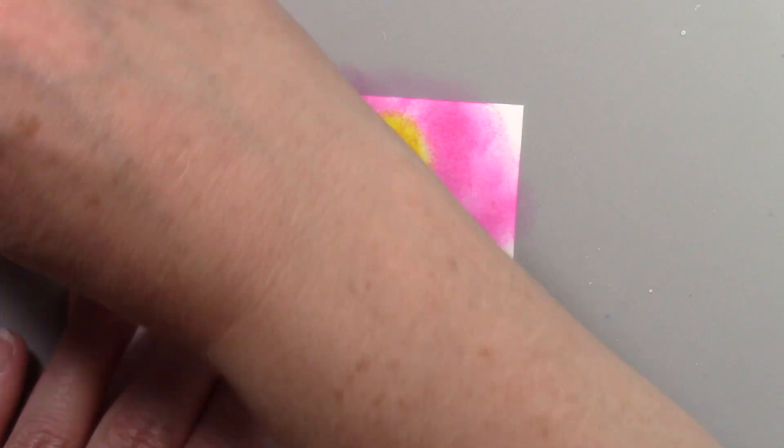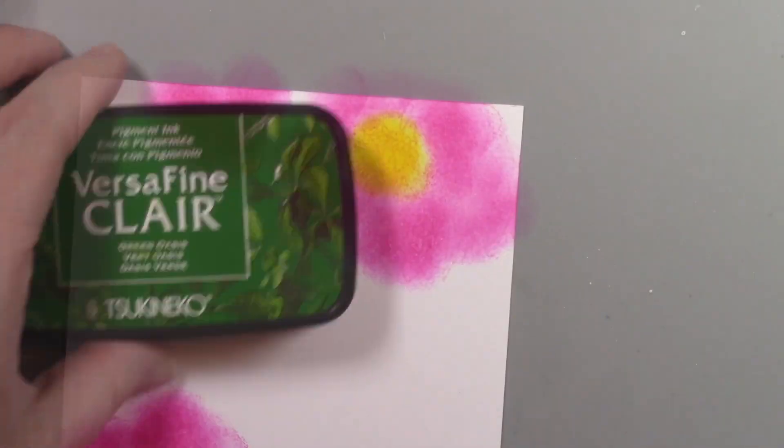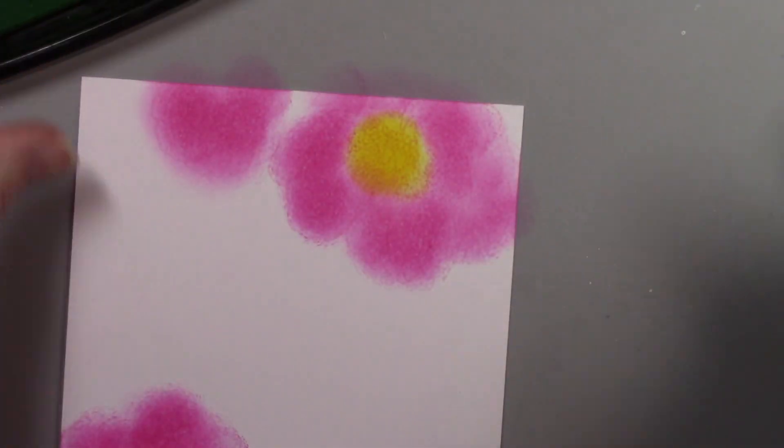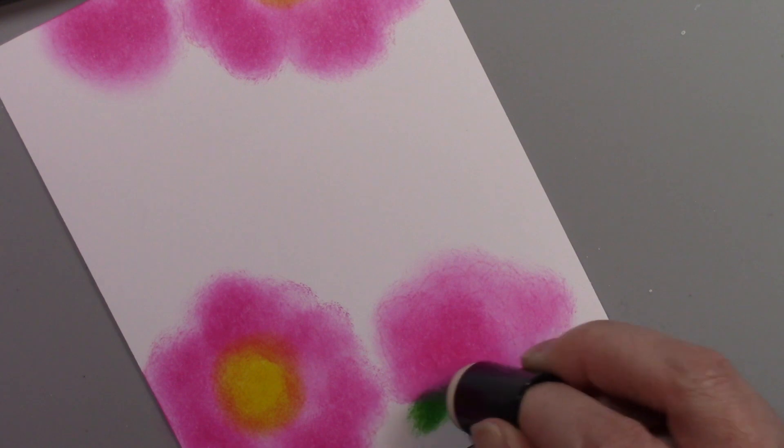So I'm going to finish that last peony with the Charming Pink VersaFine Clair and sponge dauber and then I'm going to move on to Green Oasis which is a fabulous bright green color and I'll be using that sponge dauber again just to color a little leaf and stem of this flower.